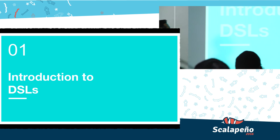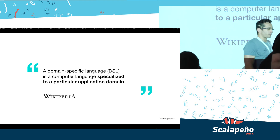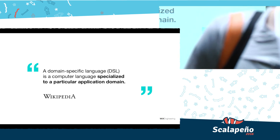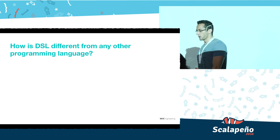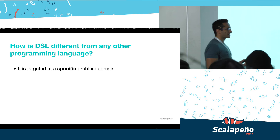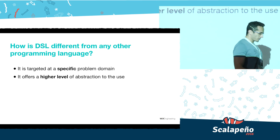What's the official definition of a DSL? According to Wikipedia, it's a programming language specialized to a particular application domain. You might ask yourself: how is it different from any other programming language? Well, there are two points. The first is that a DSL is targeted to solve only a specific problem.